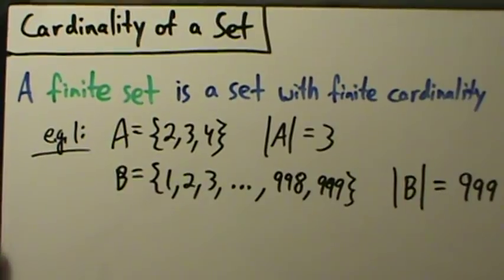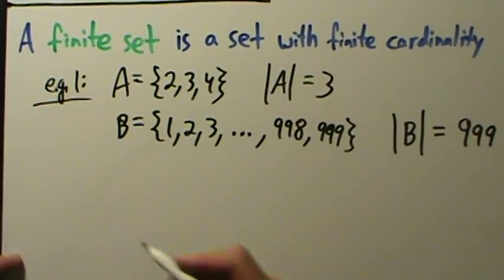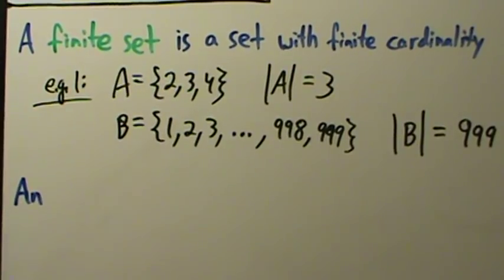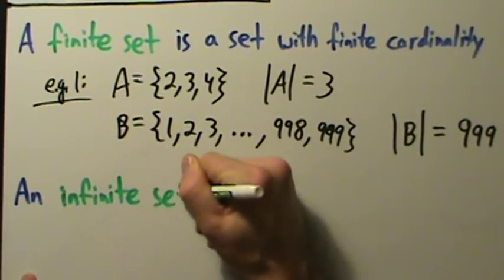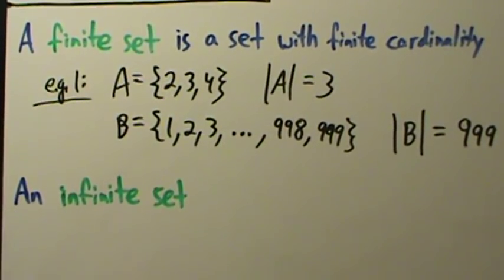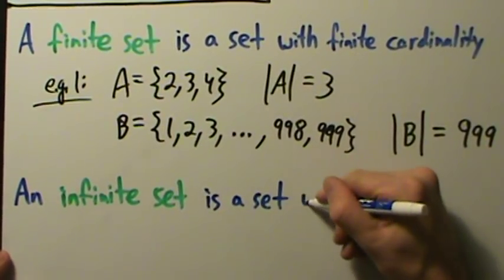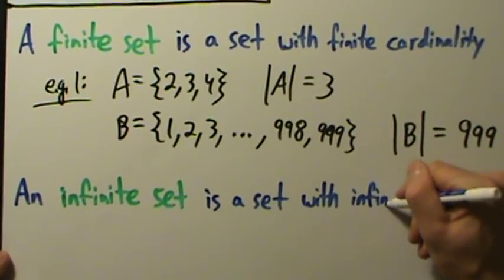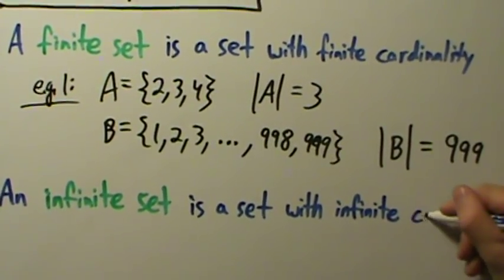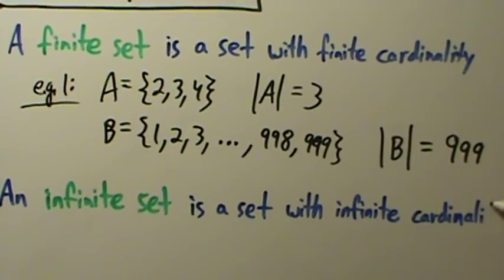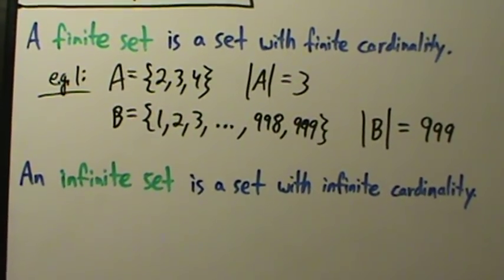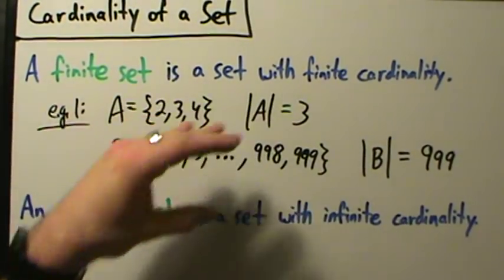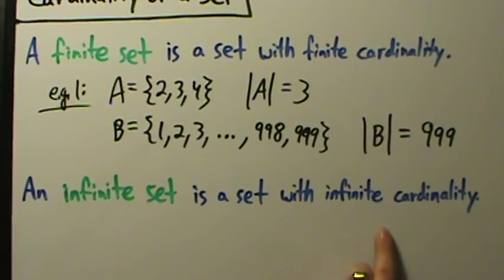Likewise, and also not surprising, we have infinite sets. An infinite set is a set with infinite cardinality — a pretty analogous definition. So a finite set is a set with finite cardinality, and an infinite set is a set with infinite cardinality.